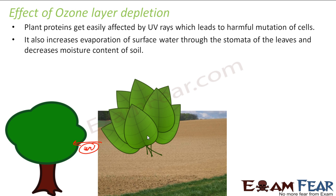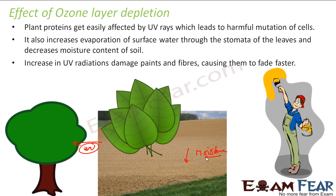With more UV rays, there is more evaporation from the surface, so the moisture content of the soil decreases. More evaporation means less soil moisture. Also, because of increased UV rays, paints will fade more easily.